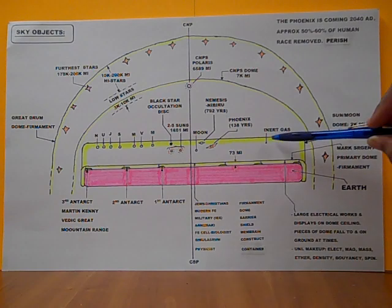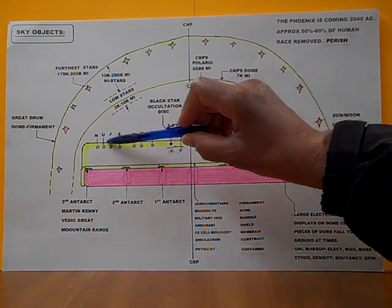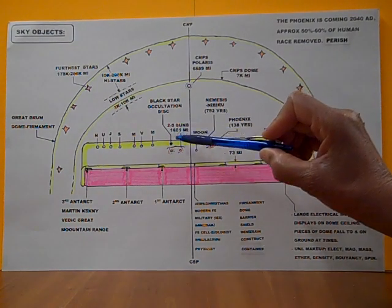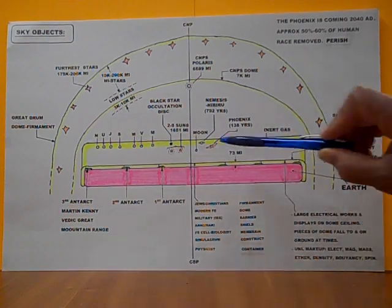The second one in yellow right here is the Sun Moon Dome. It's approximately 2,000 miles above the earth. And within the Sun Moon Dome, we have two to five suns.